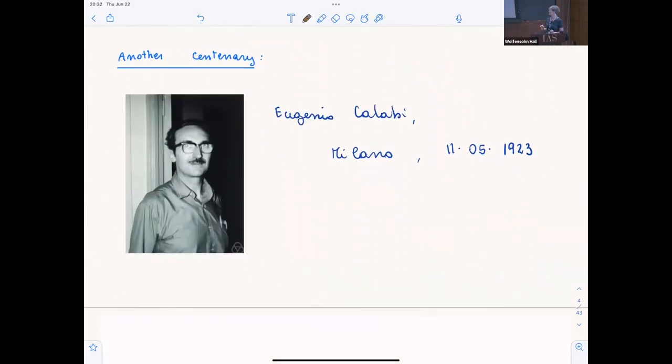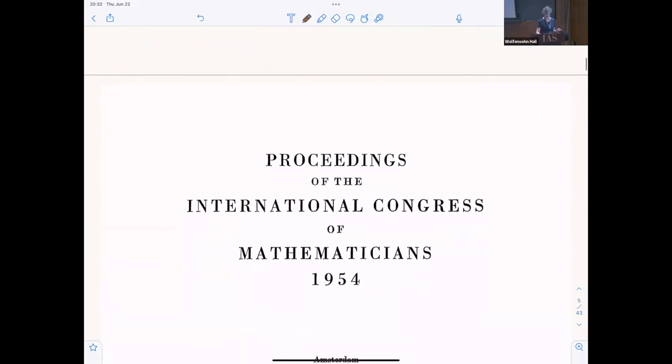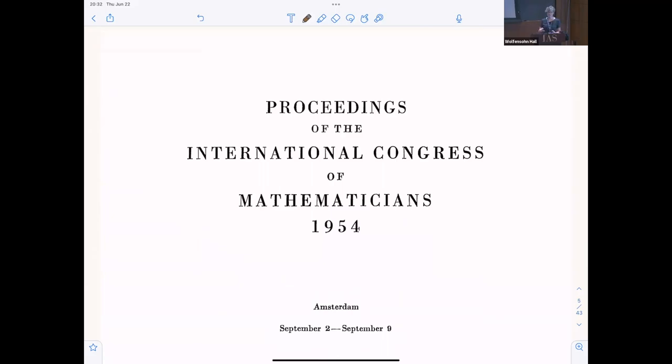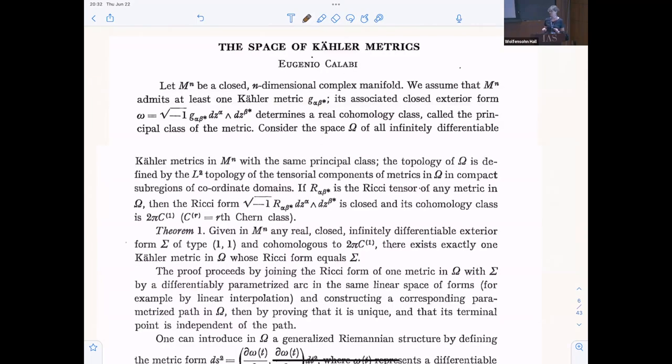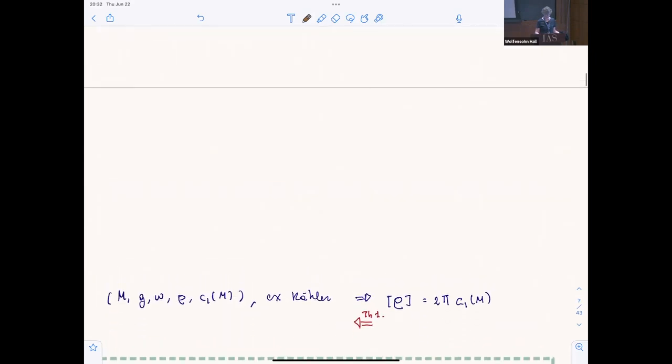This year was also another centenary. Last month, Eugenio Calabi turned 100. He was born in Milano and is mostly famous for another very short communication which he gave at the International Congress of Mathematics in 1954. It's one page, shorter than Emmy Noether, and in English it states a theorem. It says the proof proceeds by, so there is no claim of being a proof.